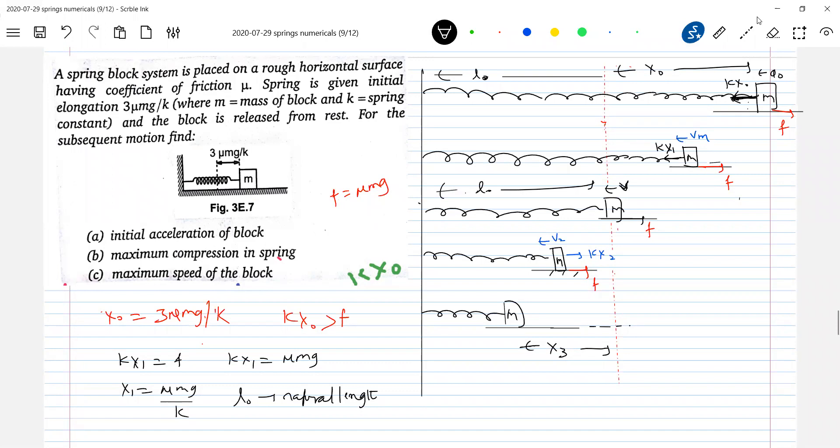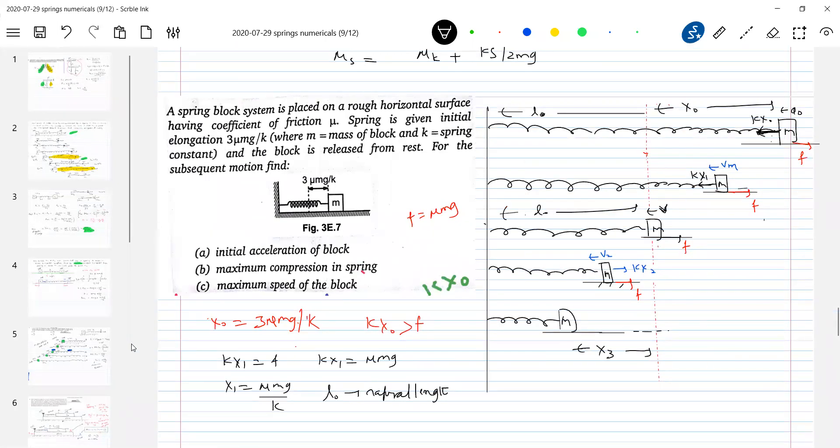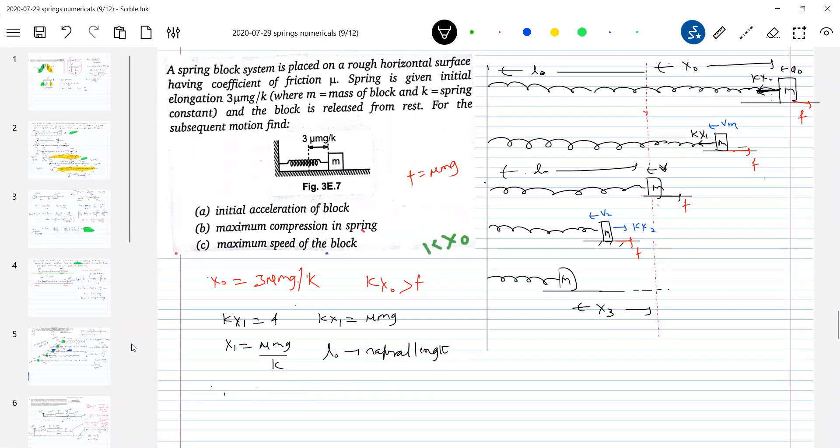So initial acceleration, I think we can find out from the... Just that initial elongation is given in the form of, in terms of mu, that's all. So you should not get confused with any other data here. Nothing big. Problem is very simple. Now what is acceleration? I'll continue on. So A0 is equal to... Acceleration A0 should be equal to Kx0 minus F by M. Substitute this. Kx0 is 3μMg. This is μMg. This is M. I think this should be equal to 2μg. This is our one answer. This option A, you keep it.